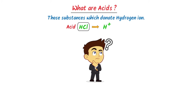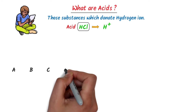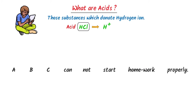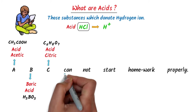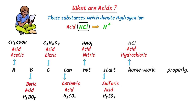Now how can we learn the list of famous acids? I always say 'ABC cannot start homework properly.' A stands for acetic acid, B stands for boric acid, C stands for citric acid, C stands for carbonic acid, N stands for nitric acid, S stands for sulfuric acid, H stands for hydrochloric acid, P stands for phosphoric acid. So this is the list of all important acids we study in chemistry.